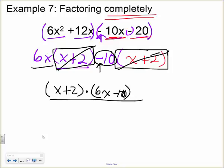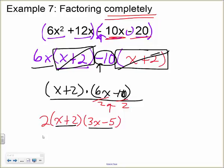The word 'completely' will sometimes throw students off. Looking at the second factor, 6x − 10, the 6 and 10 still have a common factor of 2, so you can factor a 2 out in front of the entire expression. That gives 2(x + 2)(3x − 5), because 6x ÷ 2 = 3x and −10 ÷ 2 = −5. Since there's nothing else to factor out of either binomial, this is the fully factored form.